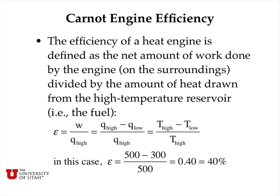We always end up throwing away some heat into a low temperature reservoir as waste heat, so we count the efficiency as the work we get out of the engine divided by the heat we put in. We can express the work as the difference between the heat from the high temperature reservoir minus the heat from the low temperature reservoir — that's just energy conservation. Using the definition of entropy, the heats are proportional to the temperatures, so we can rewrite the efficiency just in terms of the temperatures of the high and low temperature reservoirs. For the example with 500 kelvins and 300 kelvins, the efficiency is 40%.